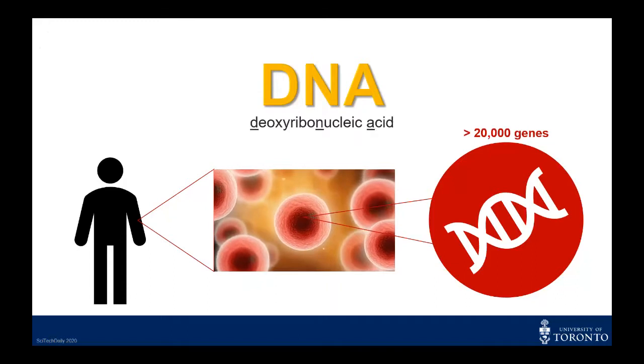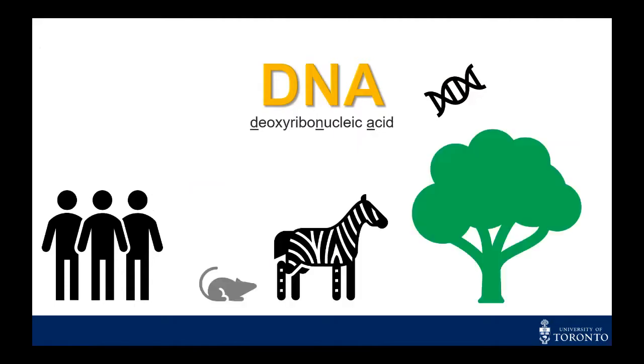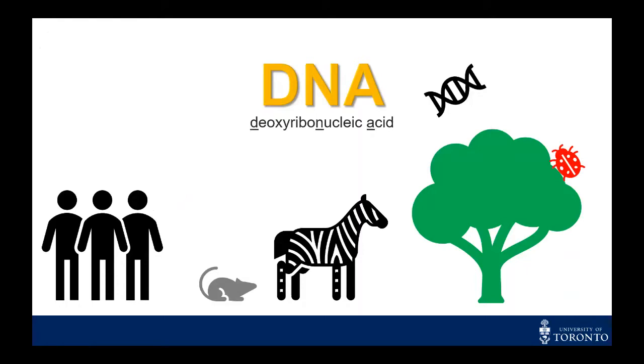Our DNA has over 20,000 genes. DNA is present in all living things, not just us, like animals, plants, and even insects.